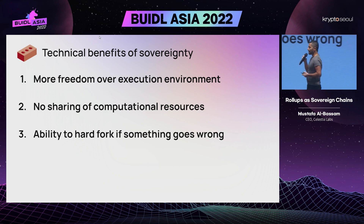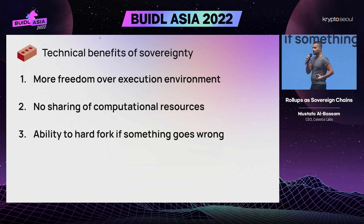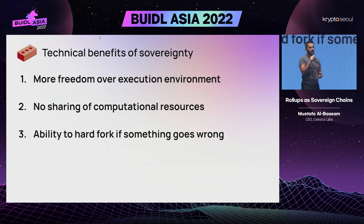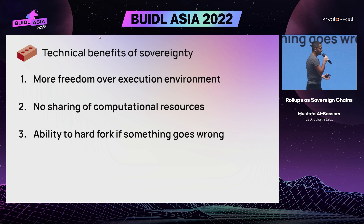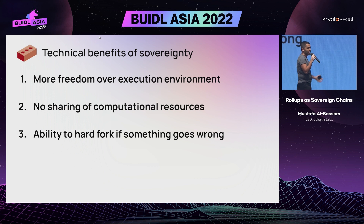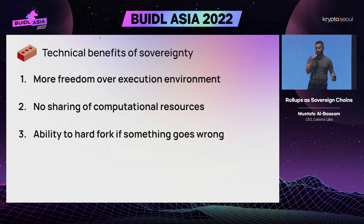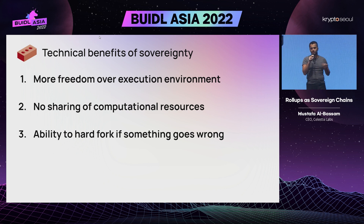More interestingly, because the rollup is effectively like an L1, it gives the community the ability to hard fork as an upgrade mechanism or as a mechanism to recover if something goes wrong, because there isn't an enshrined on-chain light client anymore. Instead, it's a peer-to-peer network. Just like how Ethereum might upgrade via hard fork, you can also upgrade a sovereign rollup via hard fork, because it has very similar properties to just launching an L1 chain.